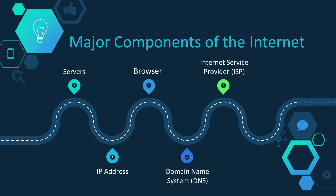We now go to the different components of the internet. There are five major components. The first component is servers. A server is a computer that makes data available to other computers. There are numerous types of servers, including web servers, mail servers, and file servers. Each type runs software that is specific to the server's purpose.